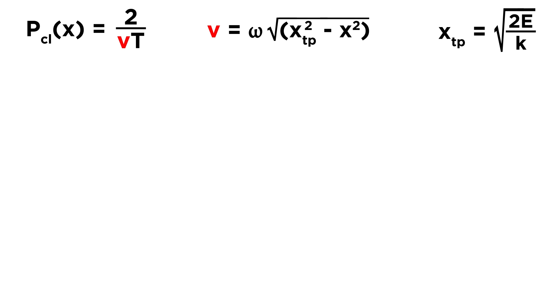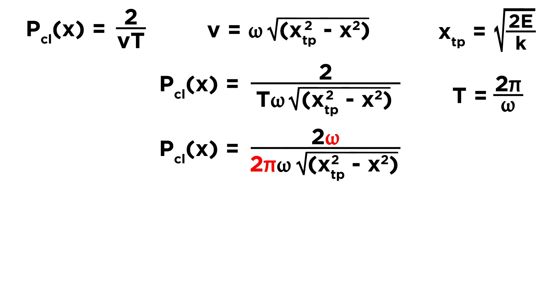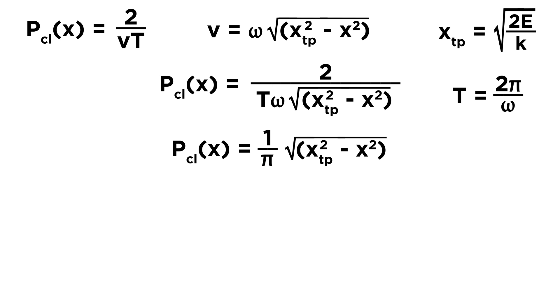Now we can plug this expression in for v in this earlier equation, and we are left with this for the probability density for the classical scenario. But let's also recall that t equals 2pi over omega, so let's make that substitution as well, by placing 2pi in the denominator and omega in the numerator, since t was in the denominator. Conveniently, the twos cancel and the omegas cancel, and we get 1 over pi times this radical. Now, it may be a little easier to conceive of this equation as a function of energy, so let's go ahead and convert xtp squared back into 2e over k. And that is where we finally end up.